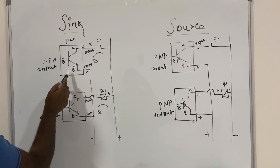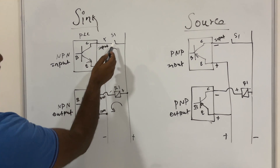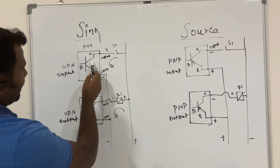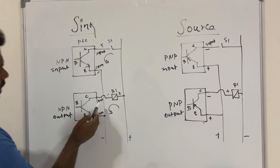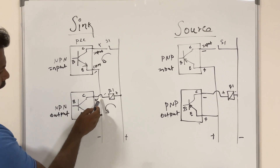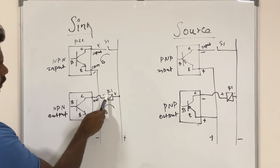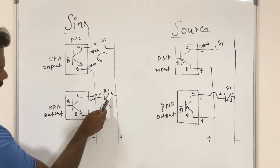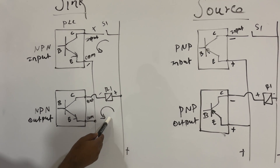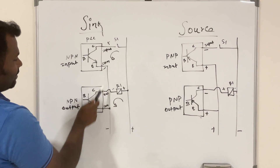In the sink type input card, you can see the NPN transistor with the collector side connected to the positive side inputs, and common connected to negative. Once switch S1 is closed, the positive supply goes to the input on the collector side, so the current flows from field to PLC — this is sink type input. For the sink type output card, the negative side is connected with the load — such as a relay. When the output is enabled, the negative connects to the load; current flows from positive through the relay to the collector and completes at the emitter on the common side. The current flow direction is the same for both sink input and sink output using the NPN transistor.